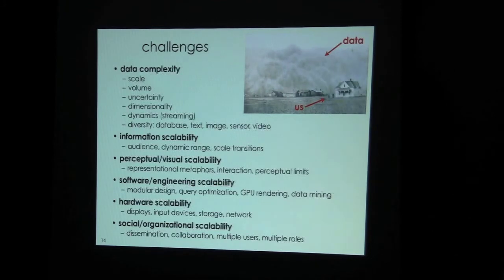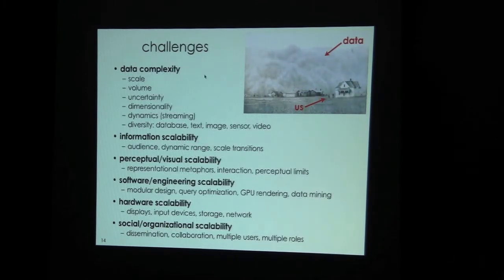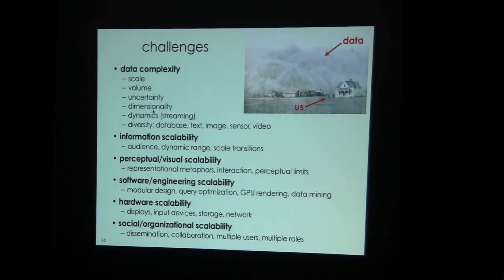For the most part the challenge is this: we have an enormous amount or enormously complex data coming at us, and we have to deal with things like the amount of data, uncertainty in the data, and high dimensionality. The Republic of Letters data has something like 15 dimensions — it's very hard to visualize that many dimensions in a coherent fashion.